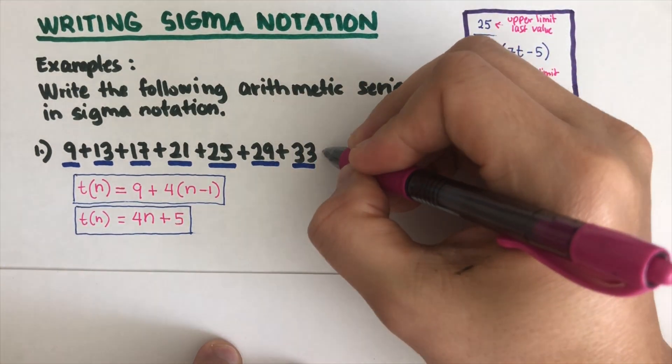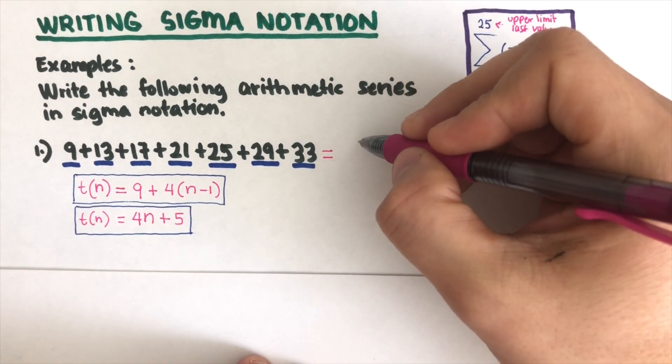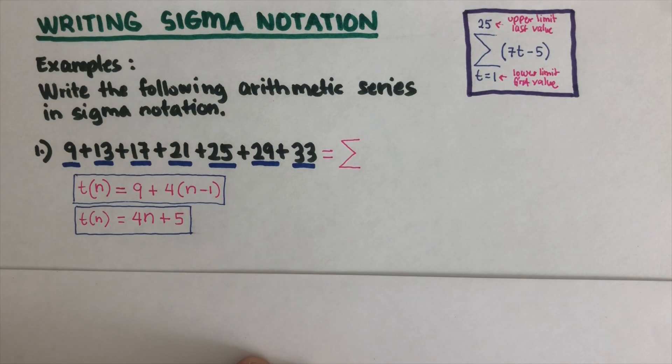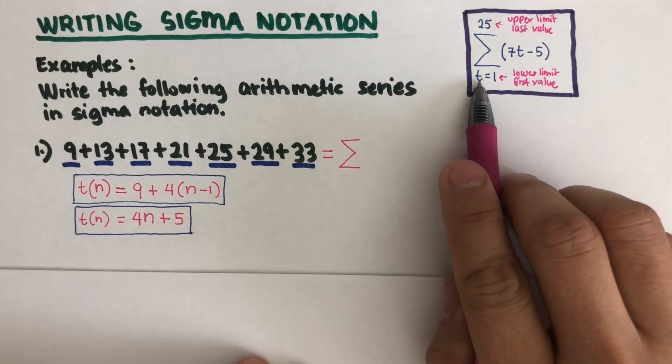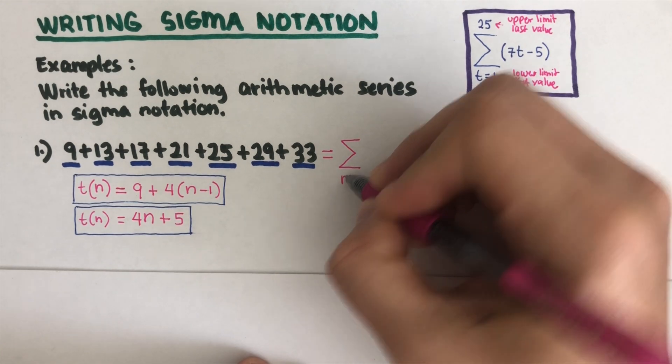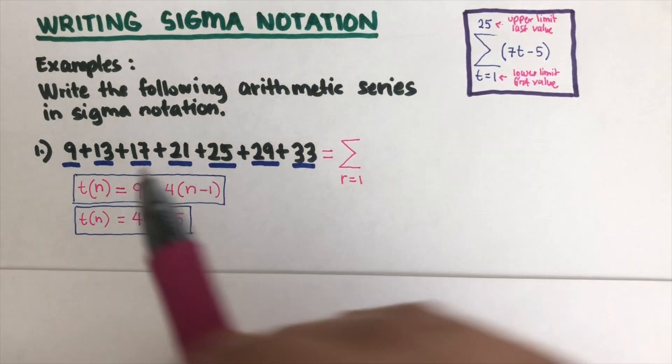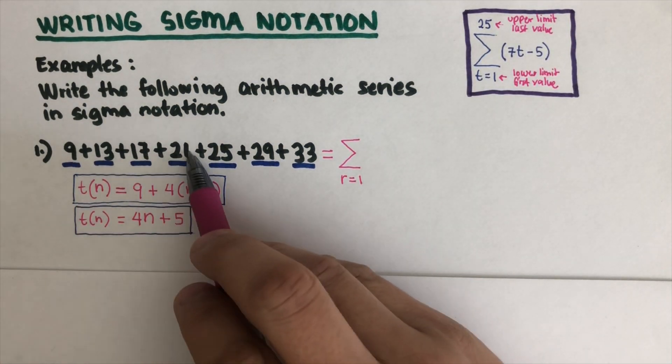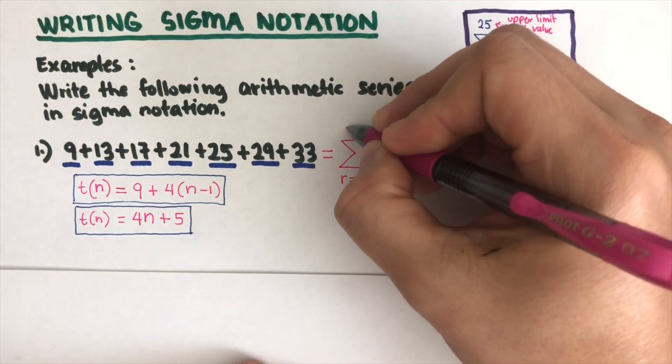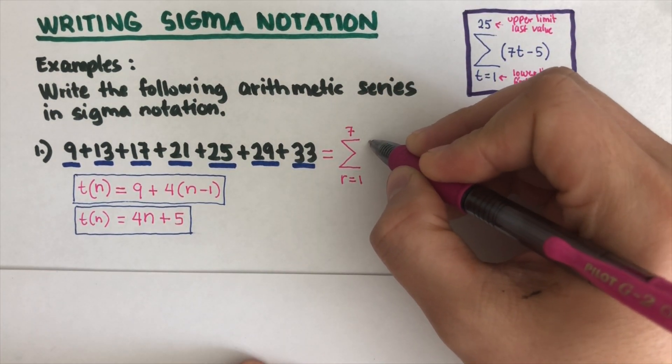So we're now ready to write the Sigma notation for this. I'm gonna write the letter Sigma first. I can use any letter on the index, so today let's use r. r is equal to 1, and then there are 1, 2, 3, 4, 5, 6, 7.